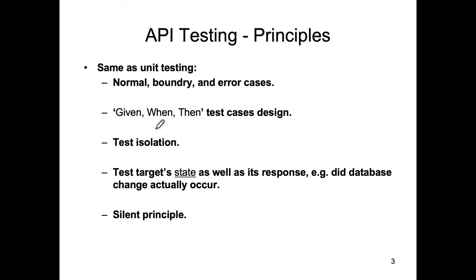Test isolation is always important. Test target state — the state in this case really relates to the database. What is the state of the database after you have tested a particular aspect of an endpoint? If the database should have changed, then did it actually change? And the silent principle we know from before as well.